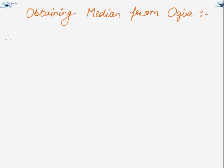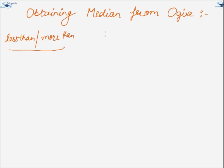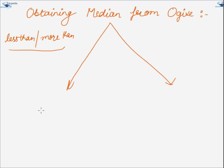Friends, in the previous video, we have learnt that there are two kinds of ogive curves: less than type and more than type. From these two ogive curves, there are two ways to calculate the approximate value of median.